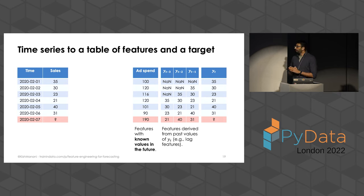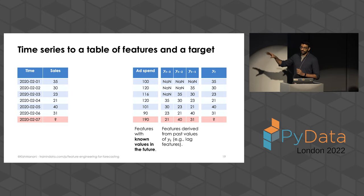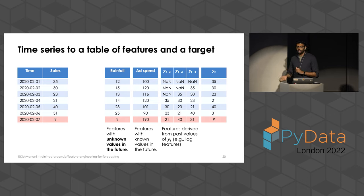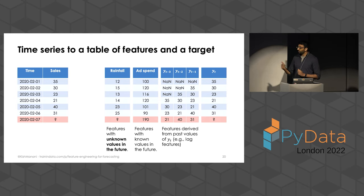You also have features where you might know the values in the past and in the future. For example, marketing spend might be one — you might know on a given day how much marketing spend there was and you observe the sales, and you might also have a budget where you know the value of marketing spend in the future. So it's quite easy to include that in your feature vector; you just use it directly. Then you might also have features where you only observe the values in the past but don't know them in the future — that typically happens with things like the weather. Perhaps rainfall affects the sales of your product, and you only know that in the past, so you have to find a way of predicting it in the future.